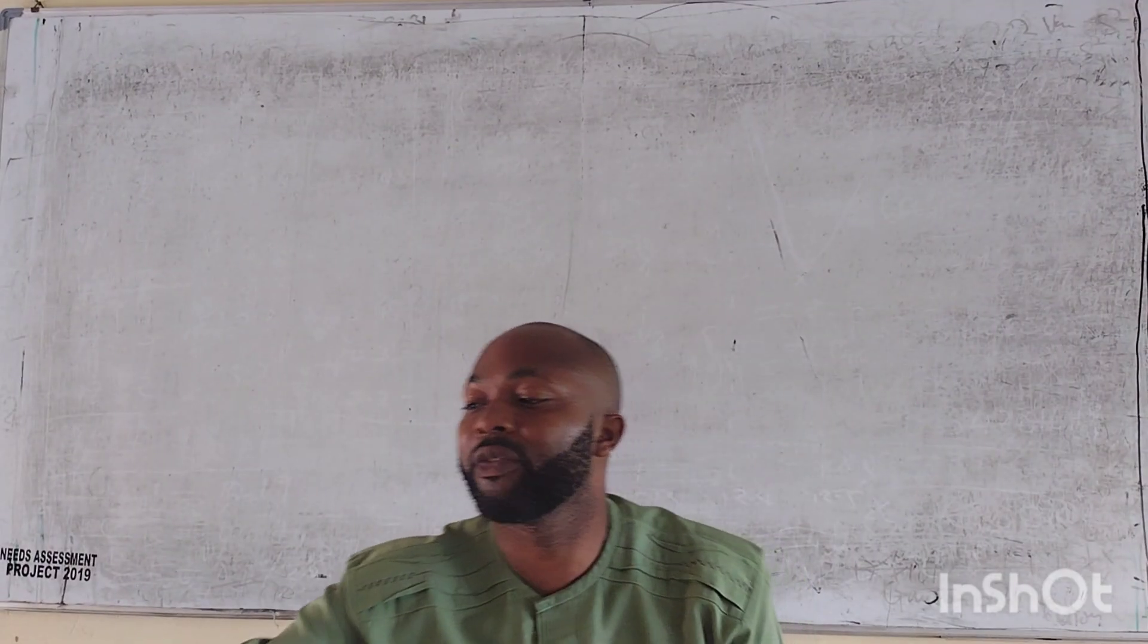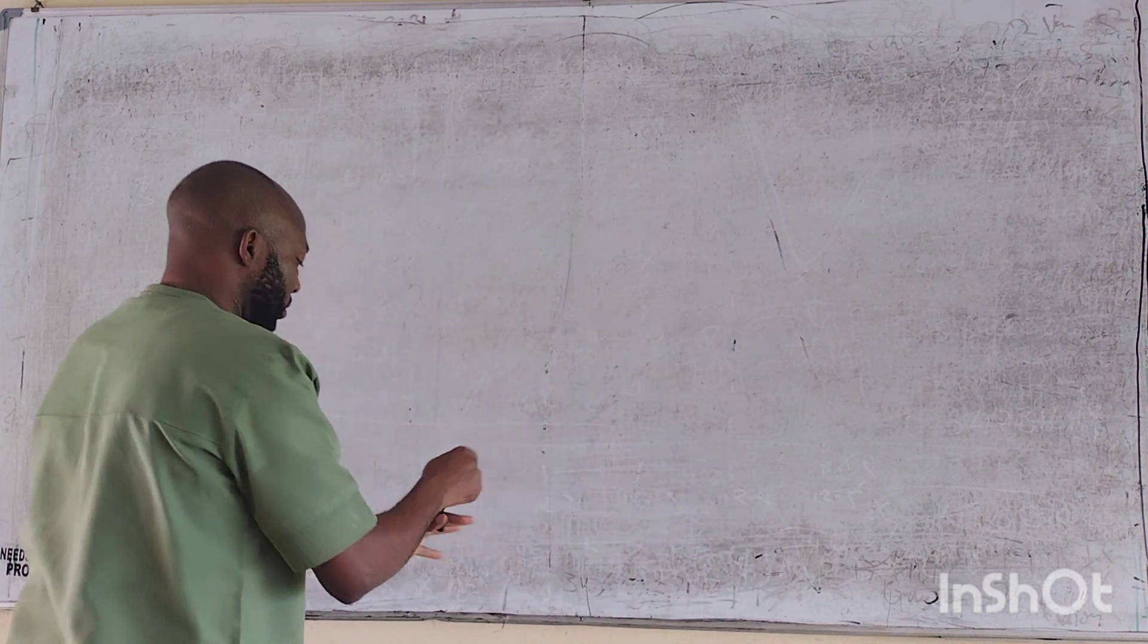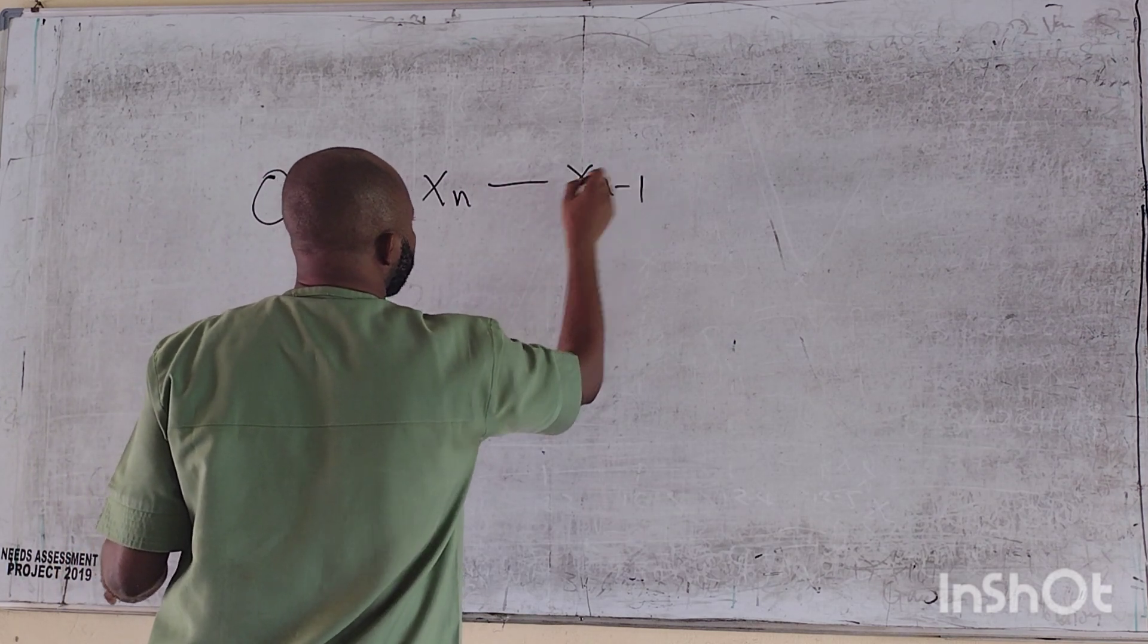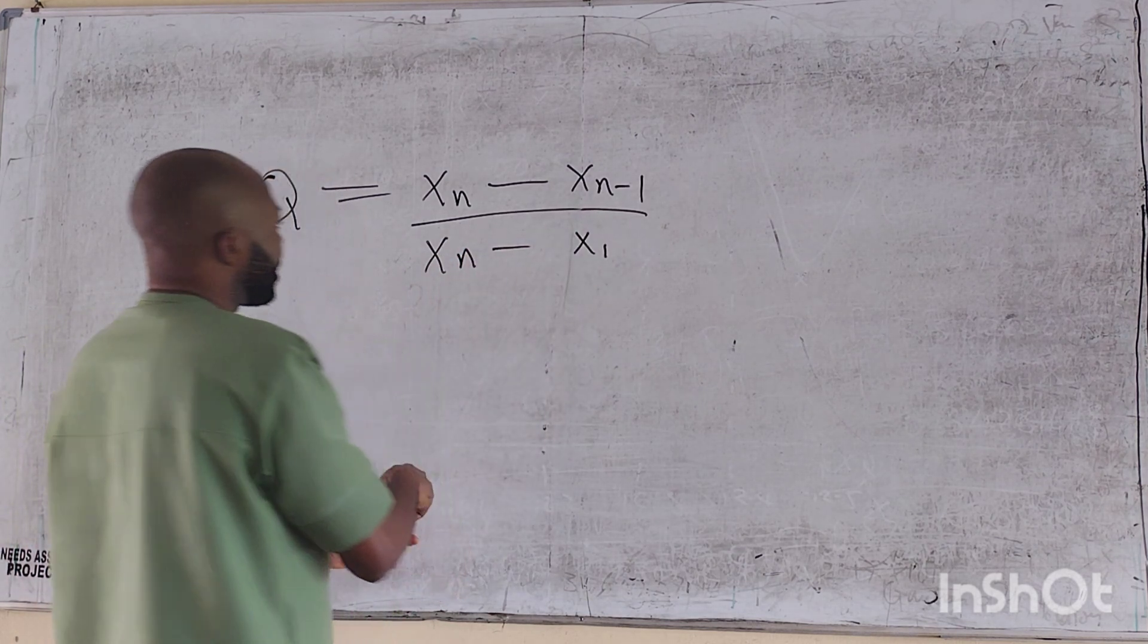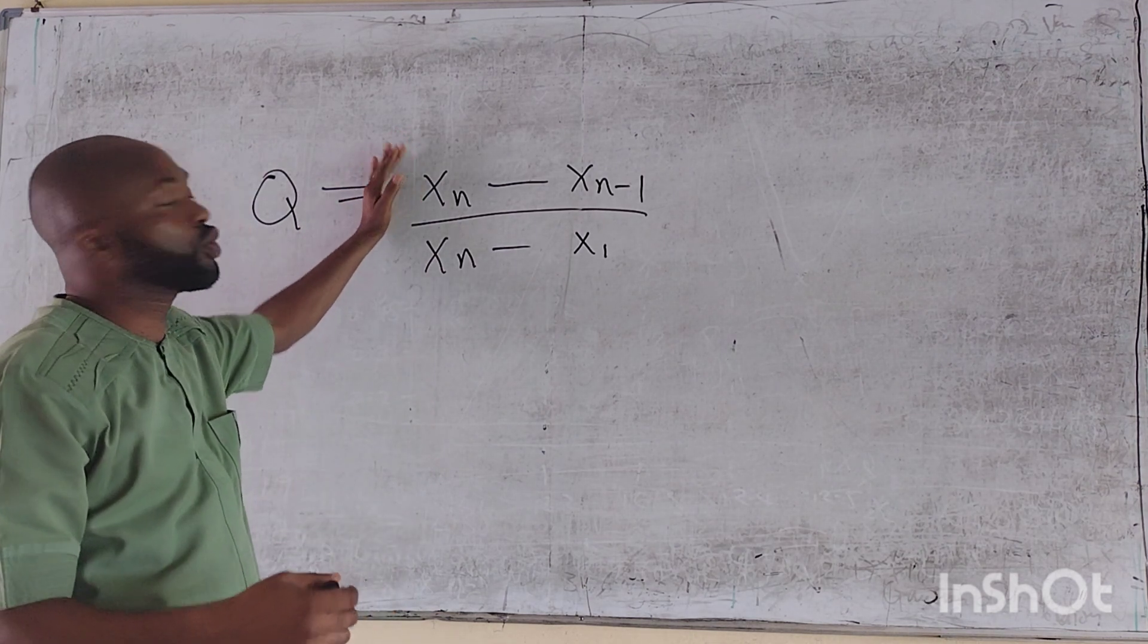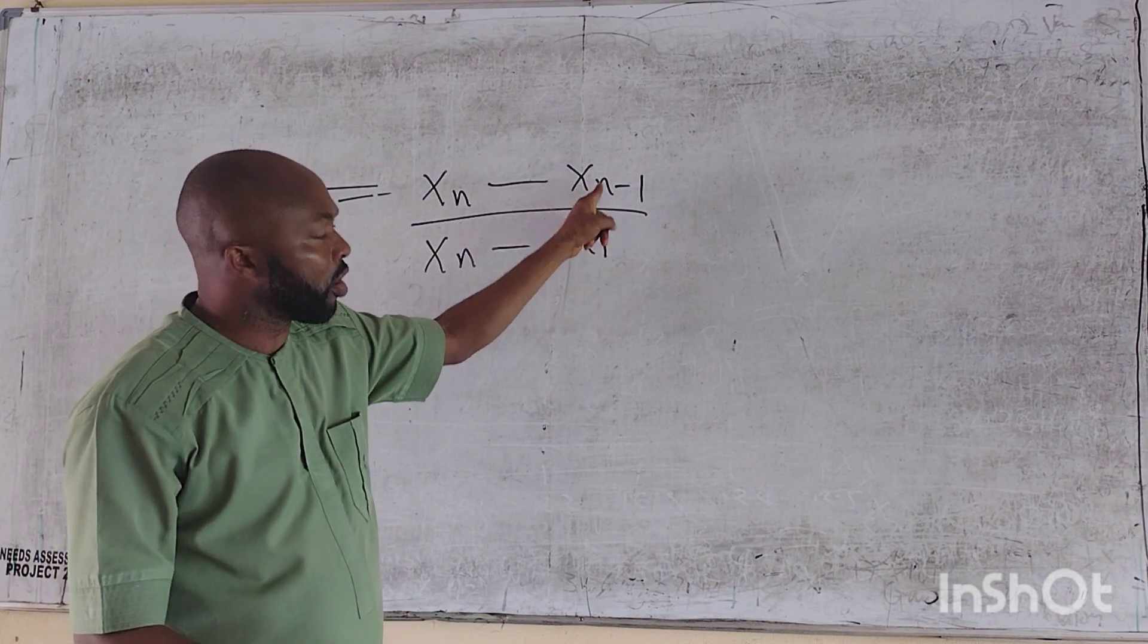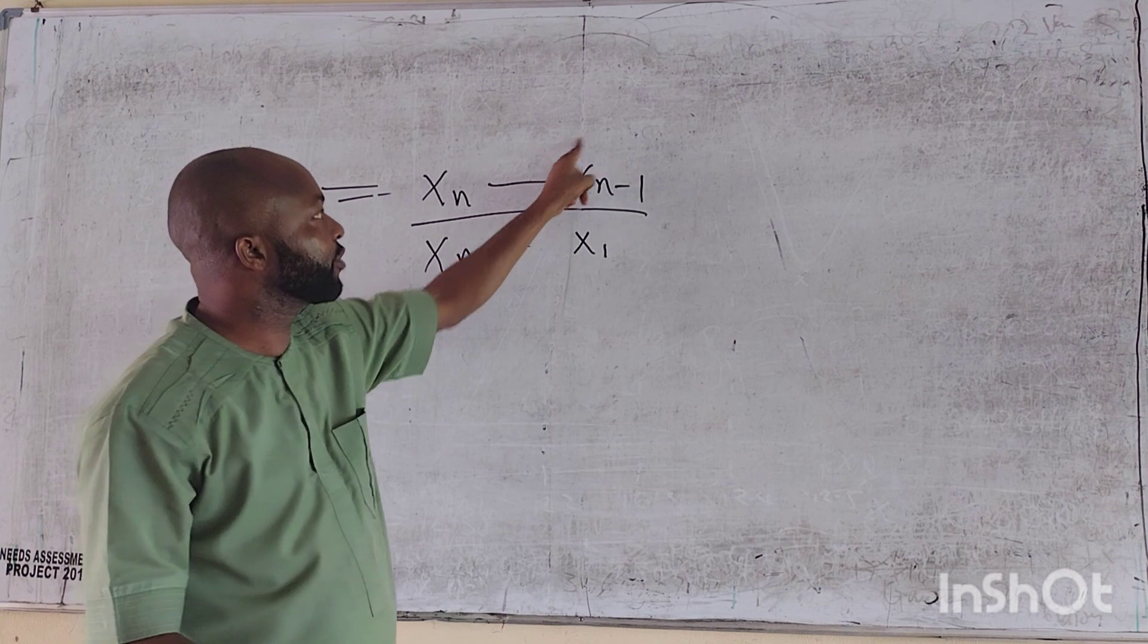Then we have our formula. Our Q, which is the quotient, is supposed to be xn minus xn minus 1 over xn minus x1. Now the xn is the questionable result, that particular variable that seems to be too big is questionable. Minus xn minus 1 is the number of the questionable variable minus 1 from there, the next variable to it.